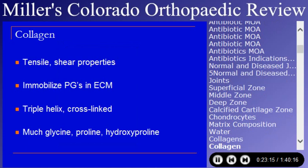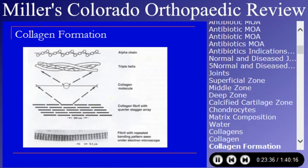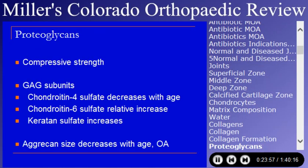Collagen gives articular cartilage its tensile and shear properties. It immobilizes proteoglycans in the extracellular matrix, is a triple helix, and is cross-linked. There is a great deal of glycine, proline, and hydroxyproline in the collagen, which can be measured as breakdown products in people with cartilage diseases. It is vitamin C-dependent for hydroxylation — that gets asked occasionally.